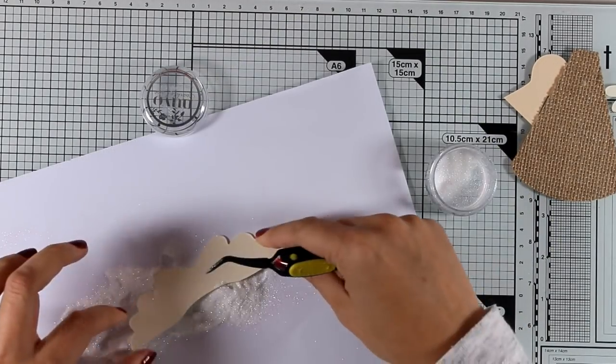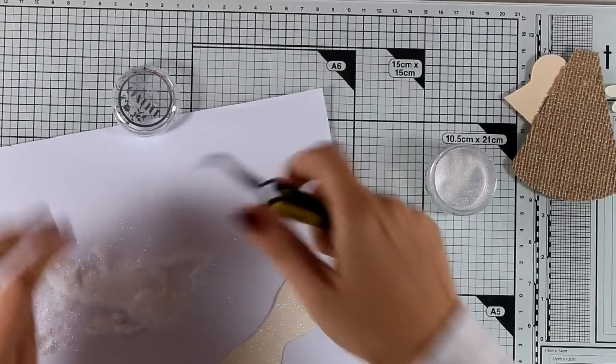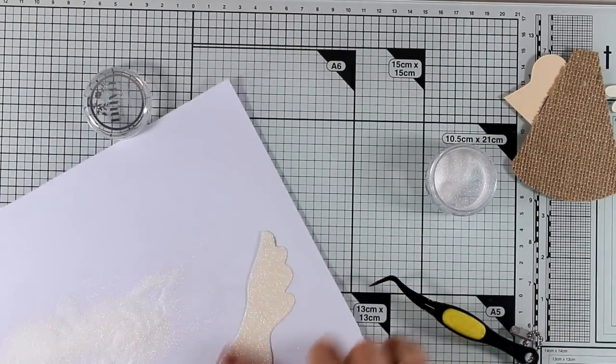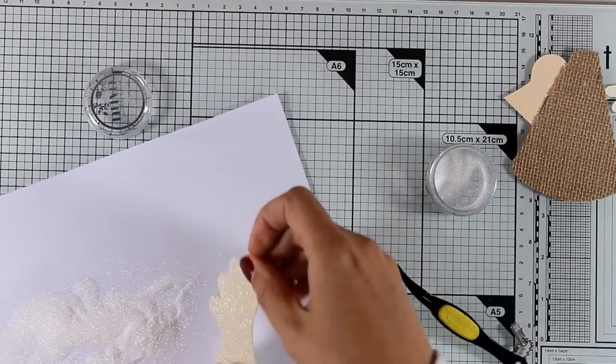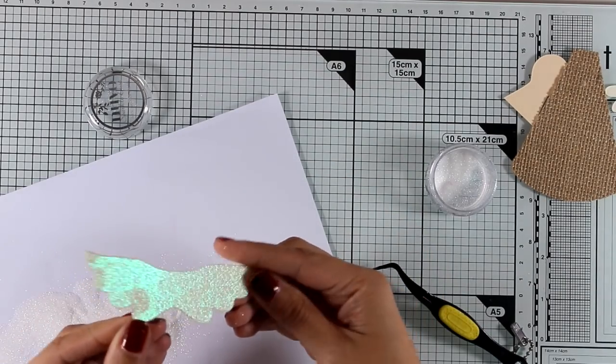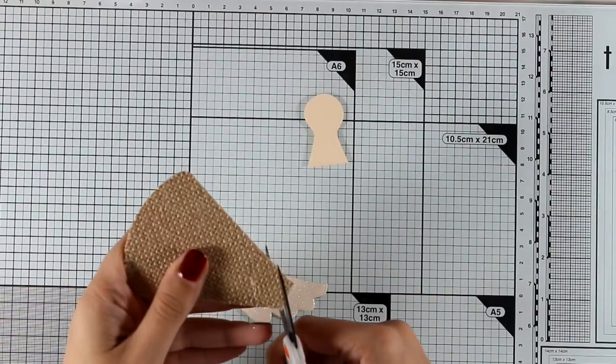The glitter that I'm using is fine glitter so it's going to stick nice on top of my wings. I'm also going to rub it with my finger just to make sure that everything is nicely stuck there.